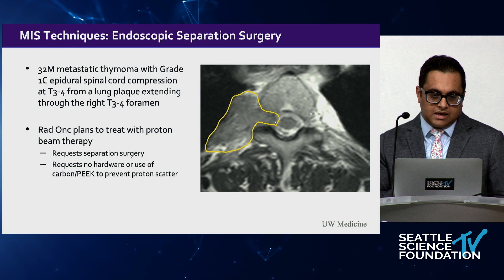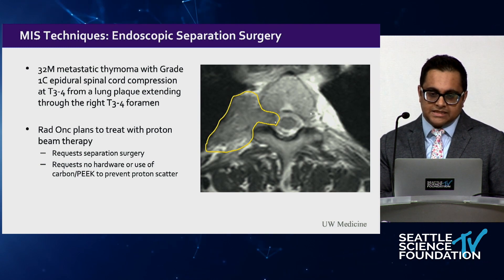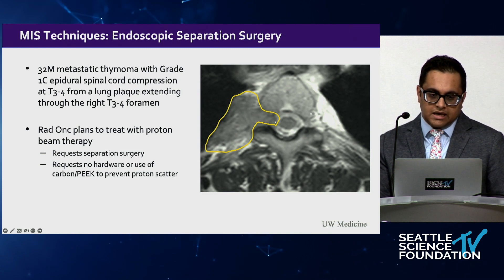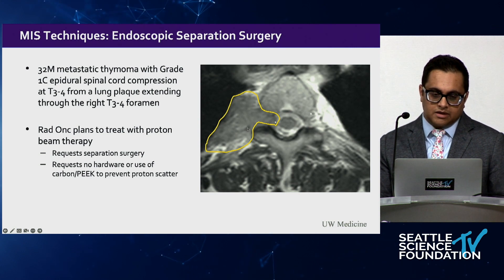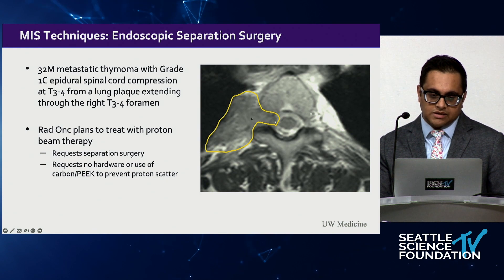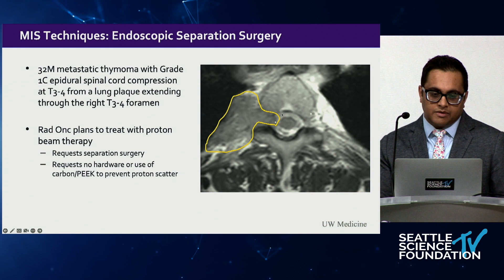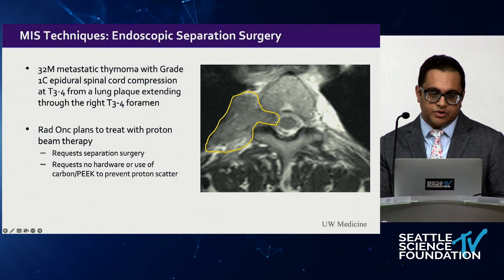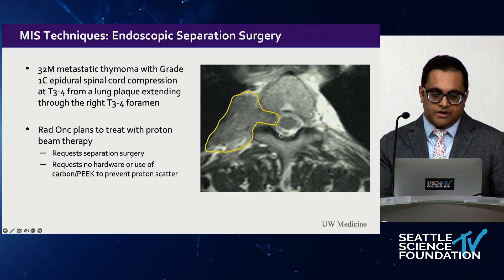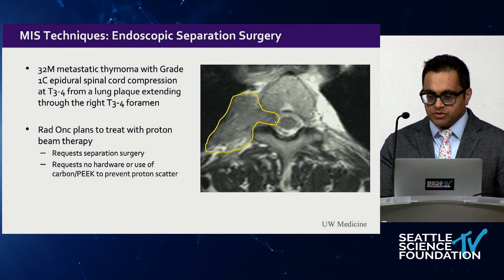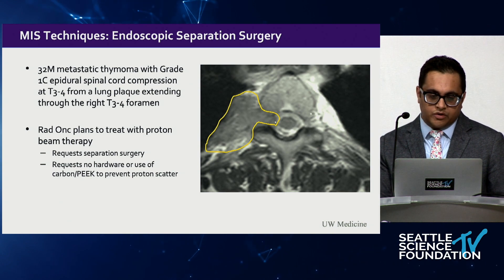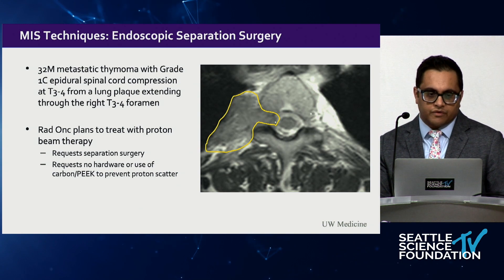Our first endoscopic separation surgery case at UW was a patient with metastatic thymoma and grade 1C epidural spinal cord compression at T3-4 from a lung metastasis extending through the foramen. This patient needed proton therapy, and radiation oncology requested separation surgery because they could not achieve the accuracy they wanted. They requested either no hardware—to reduce scatter—or very expensive carbon PEEK instrumentation. Since this was unilateral disease needing only a small amount of separation, it was an ideal first case for endoscopic spine surgery.